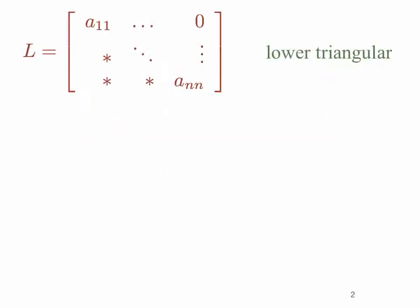In this video we consider some special matrices and their determinants. First, let's look at matrices called lower triangular. A matrix is lower triangular if it has entries along the diagonal and below the diagonal, with zero entries above the diagonal. So lower triangular means that there is a triangle formed below the diagonal.